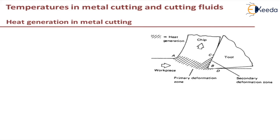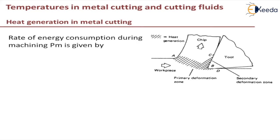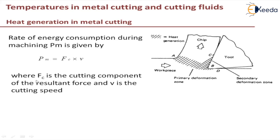The rate of energy consumption during machining, Pm, is given by Pm equals Fc into cutting speed V, where Fc is the cutting component of the resultant force and V is the cutting speed. Whatever energy which we are supplying by the motor is consumed for the cutting force, that is equal to Fc into V.